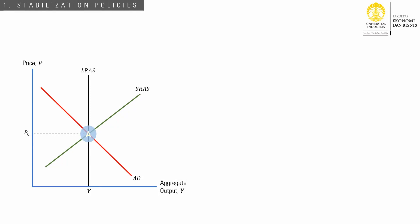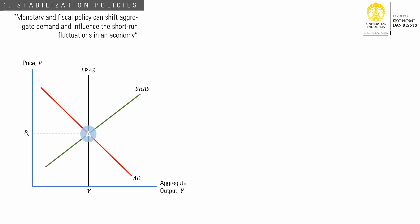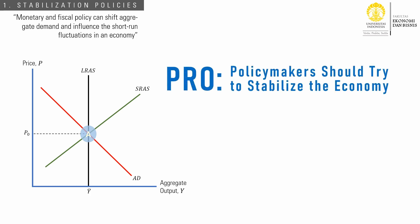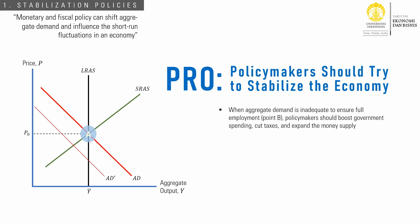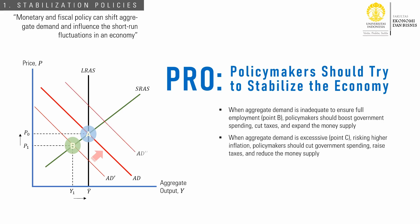The first debate is about whether policymakers should try to stabilize the economy or not. We have learned how monetary and fiscal policy can shift aggregate demand and influence the short-run fluctuation in an economy. Those who advocate to smooth the ups and downs of the business cycle believe that when aggregate demand is inadequate to ensure full employment, such as at point B, policymakers should boost government spending, cut taxes, and expand aggregate demand. When aggregate demand is excessive, like at point C, risking higher inflation, policymakers should cut government spending, raise taxes, and reduce aggregate demand.